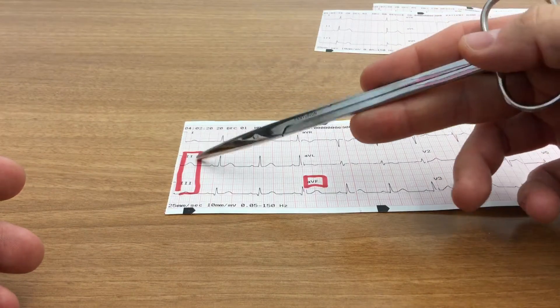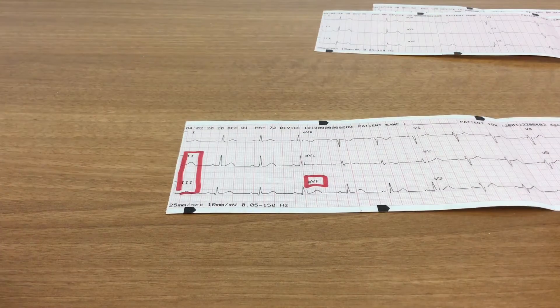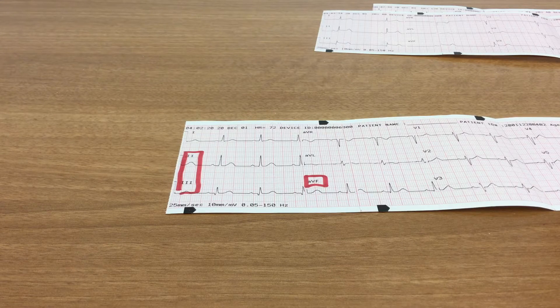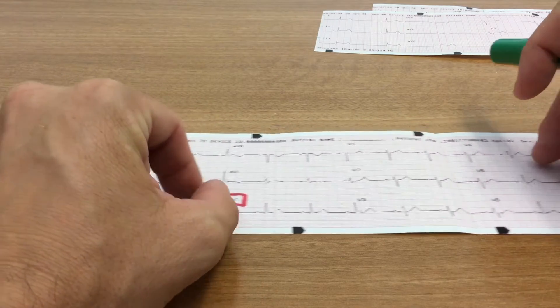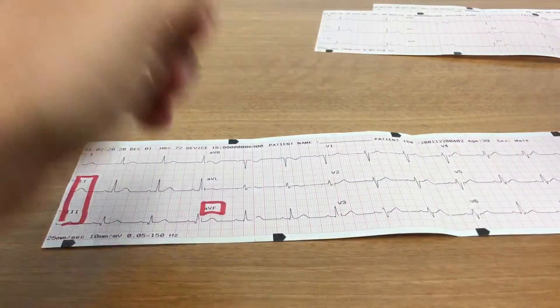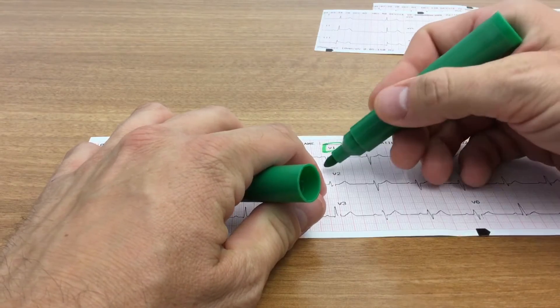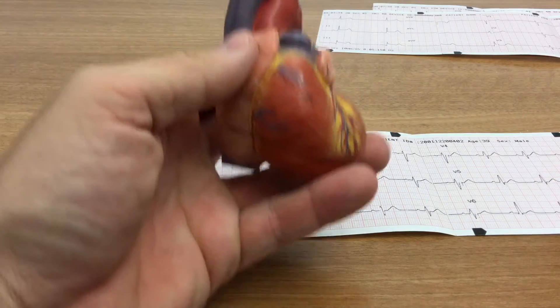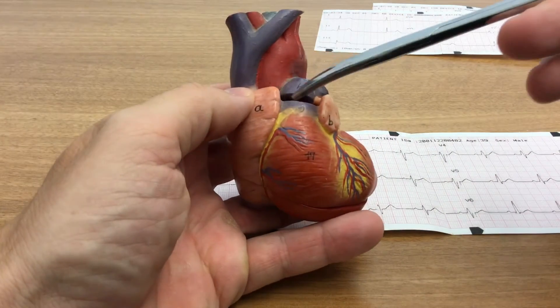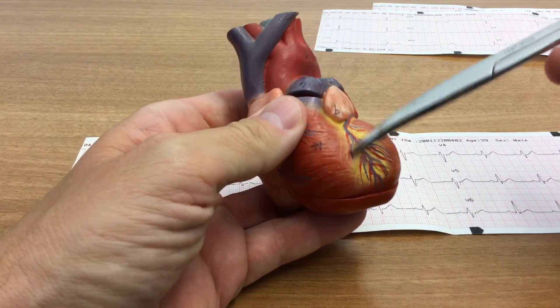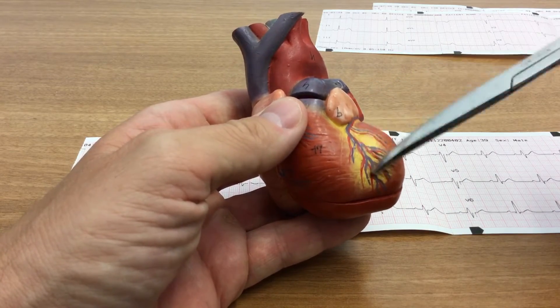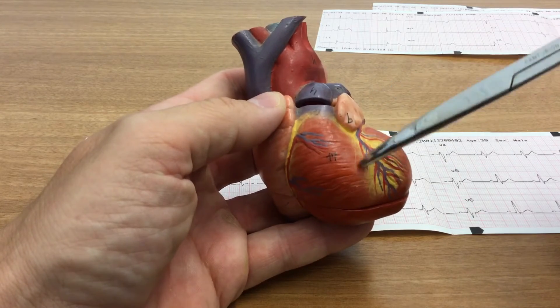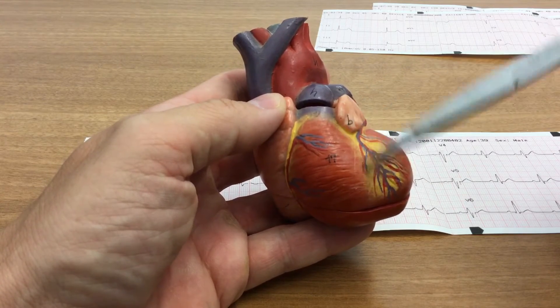So I, inferior wall, 2, 3, AVF. Okay, so the next one that we're going to move on to is the septal wall, the S. And the septum is represented by leads V1 and V2. So if we look back at our heart again here, that's the left coronary artery. Specifically, it is the left anterior descending branch of the left coronary artery. It's actually going to be relatively high up on the LAD, and then you have your septal wall right here.